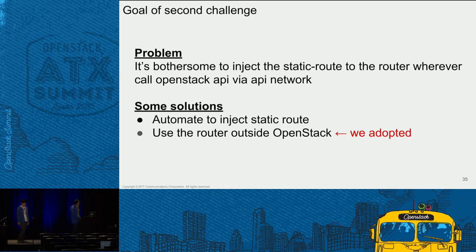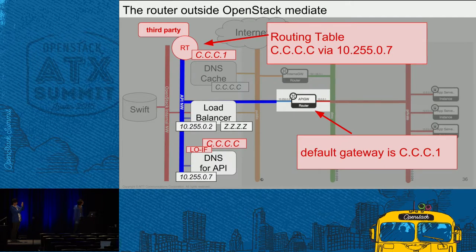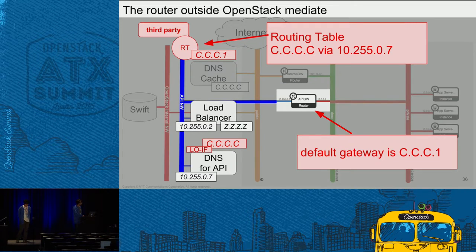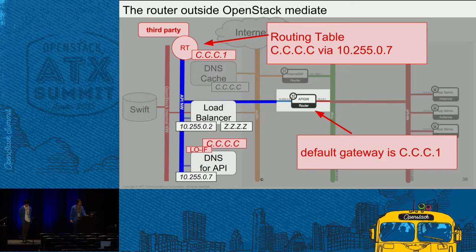Against this problem there are some solutions, for example automating the injection of static routes or using a router outside OpenStack. I adopted the external router solution because it's simple. In this solution, we need a new extra router to receive the injected static route, but we don't need to inject static routes to each tenant router. All we have to do for the tenant router is set the default gateway to the new extra router. So all packets are sent to this extra router and forwarded to the DNS server for API, because this router has the static route. So we become free from configuring each tenant router.